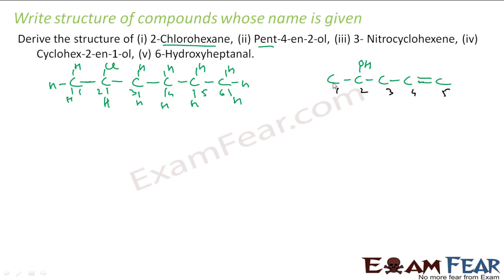Then we have to just balance the carbon. This guy has only 1 bond, so add 3 more bonds to make it 4. This guy has 3 bonds, add 1 more. This guy has 2, add 2 more. This guy has 3, add 1 more. This guy has 2, add 2 more. This is my pent-4-en-2-ol.